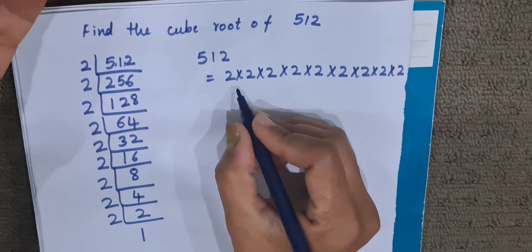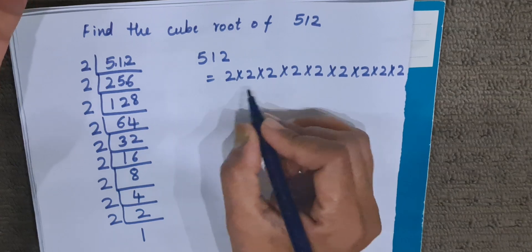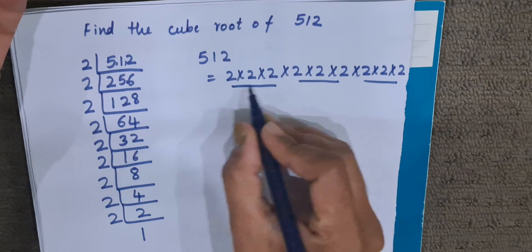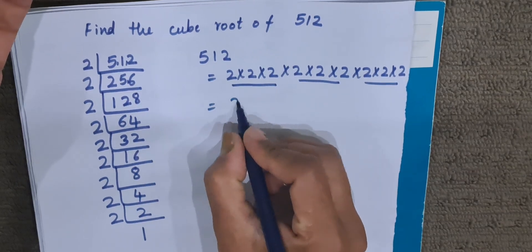So we will make a set of 3 twos. Okay, 1, 2, 3. A set of 3 twos means what? It is 1 number. We will consider it like this.